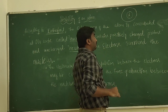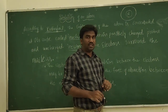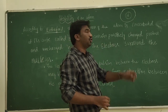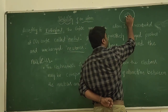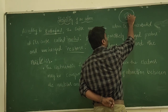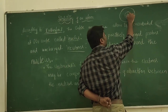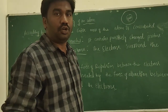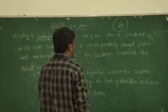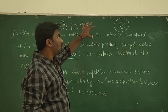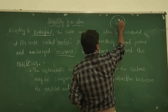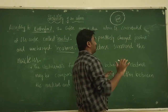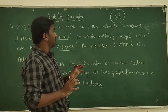The nucleus contains positively charged protons and uncharged neutrons, and the electrons revolve around this nucleus. This is the basic concept of the atom.